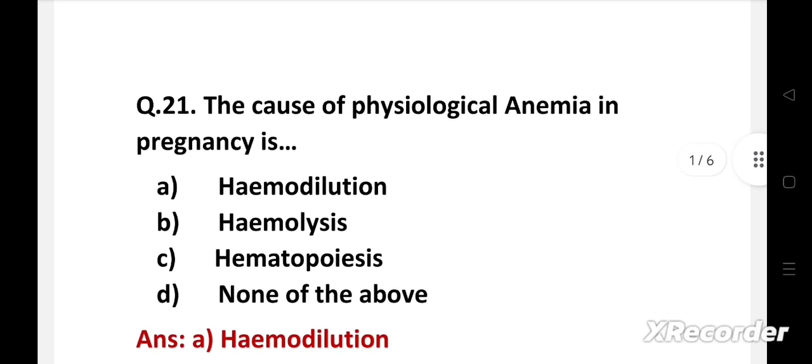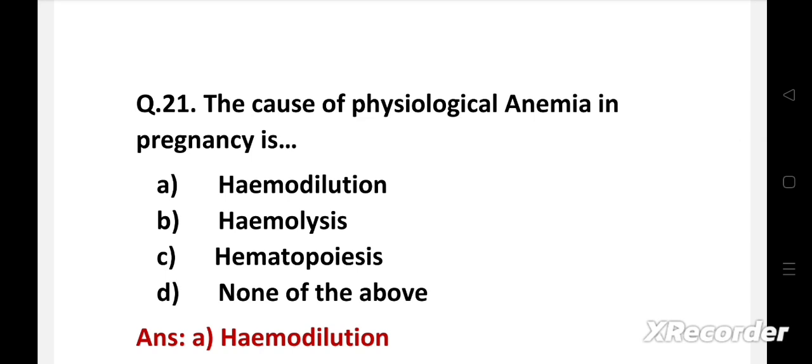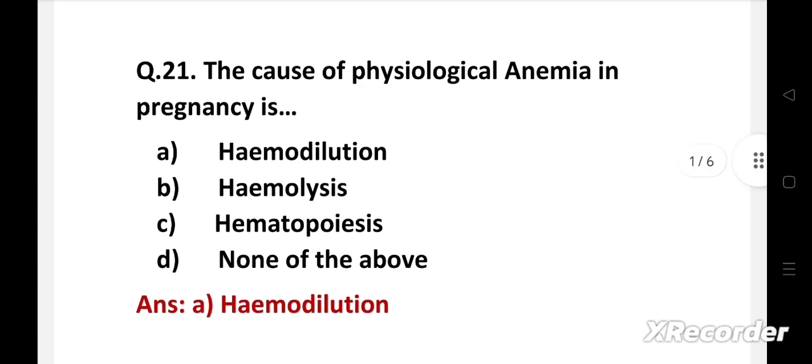Right answer is option A: hemodilution. Hemodynamic changes occur in pregnancy to prepare for expected blood loss at delivery. Physiologic anemia occurs in pregnancy because plasma volume increases more quickly than red cell mass.